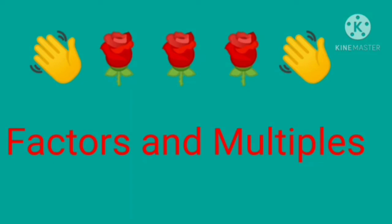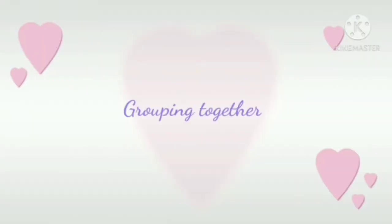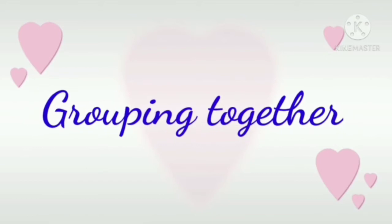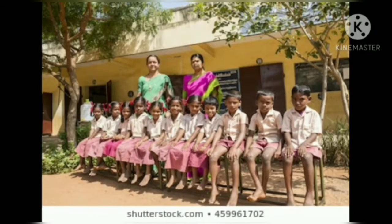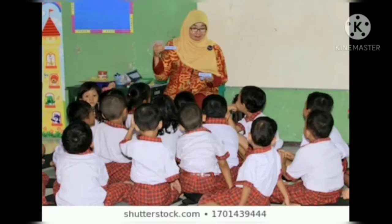Children, today we are going to do one activity. The activity is grouping together. We need 12 students in the activity. Students, now if you are moving in a circular path, I will announce one number, and you have to make groups having the number of members announced.